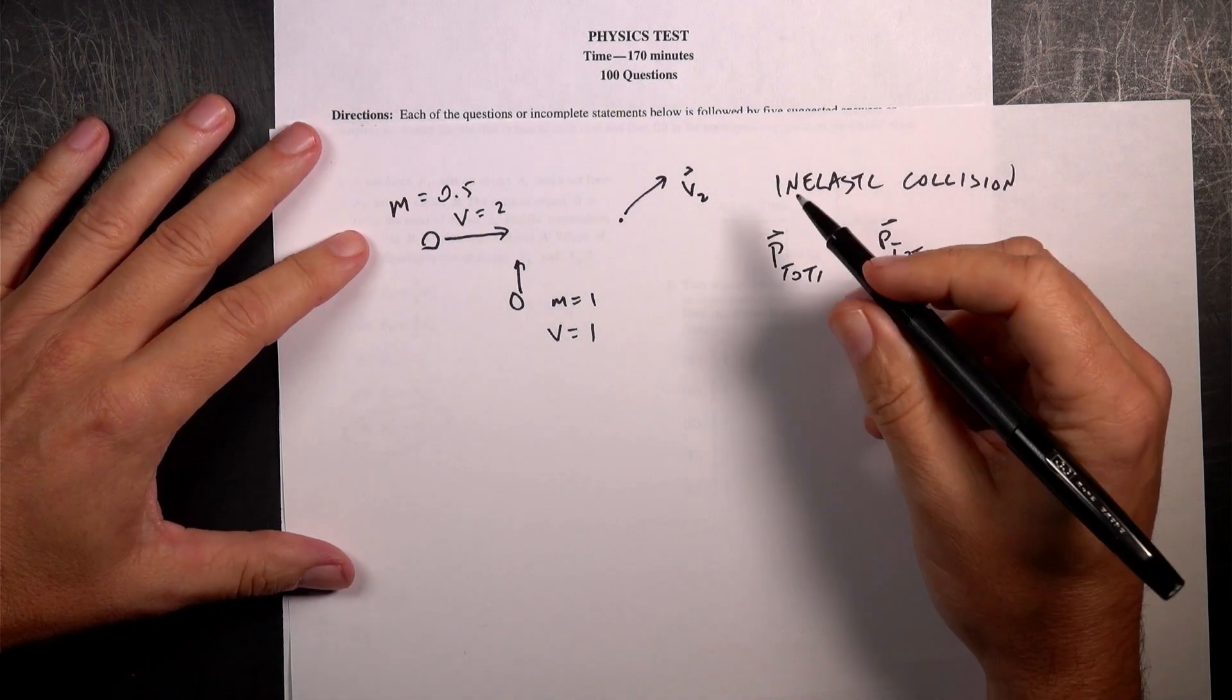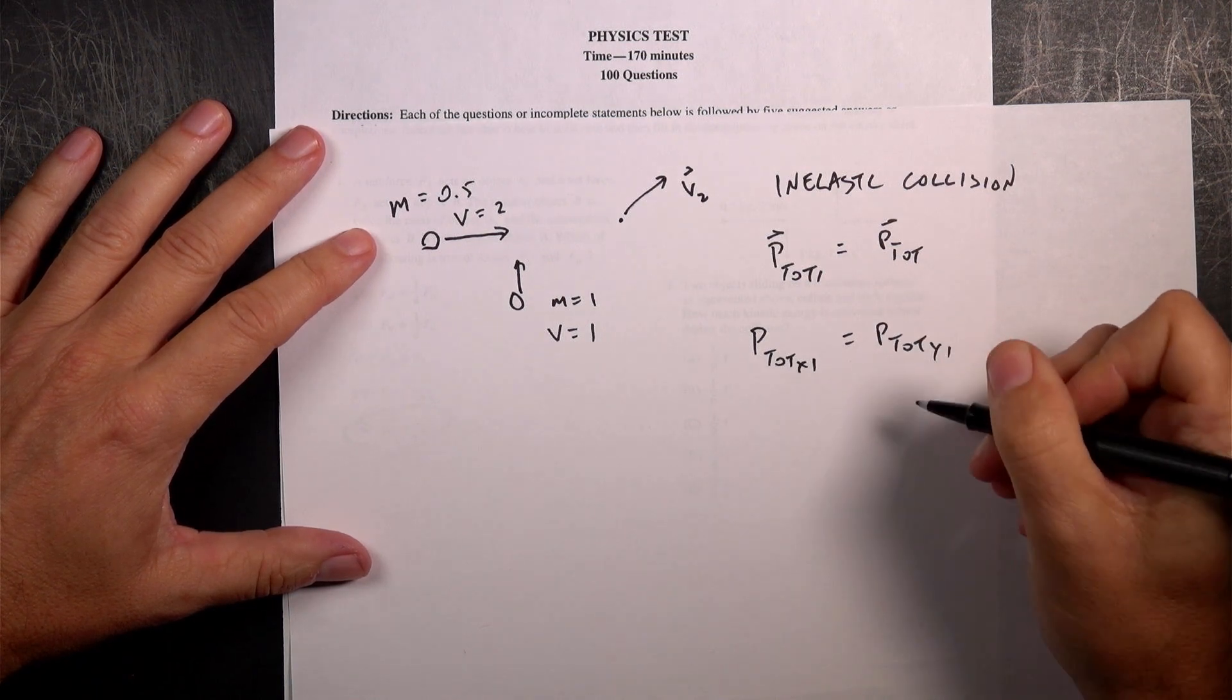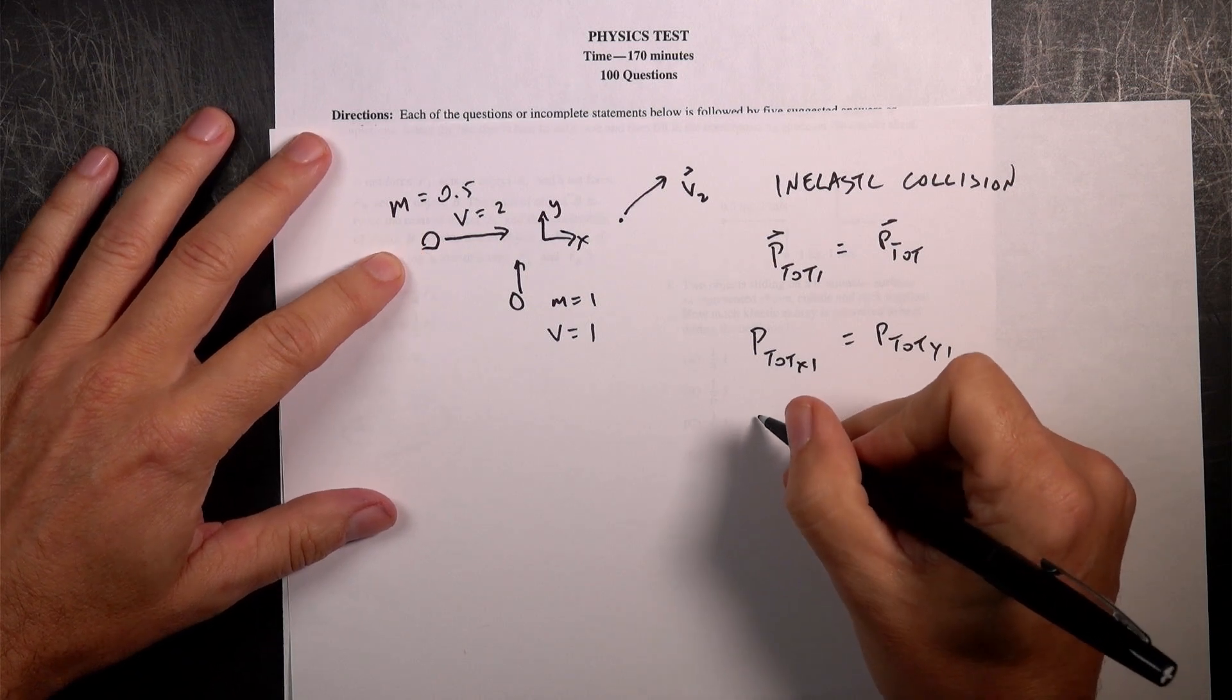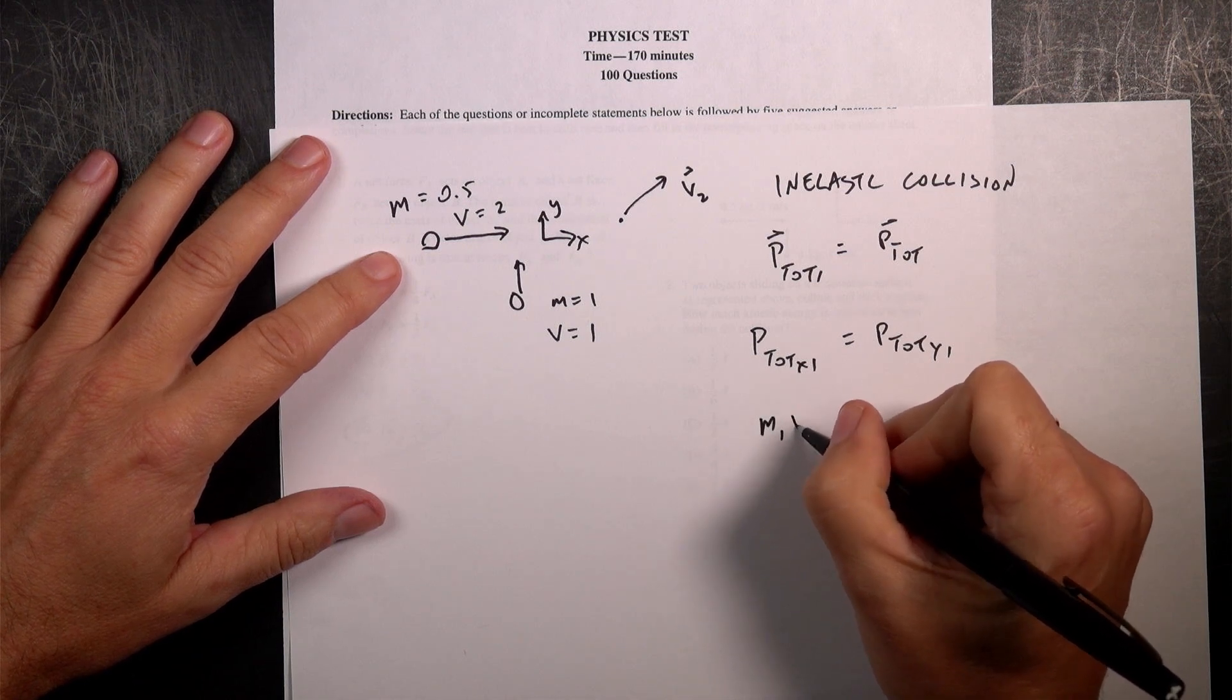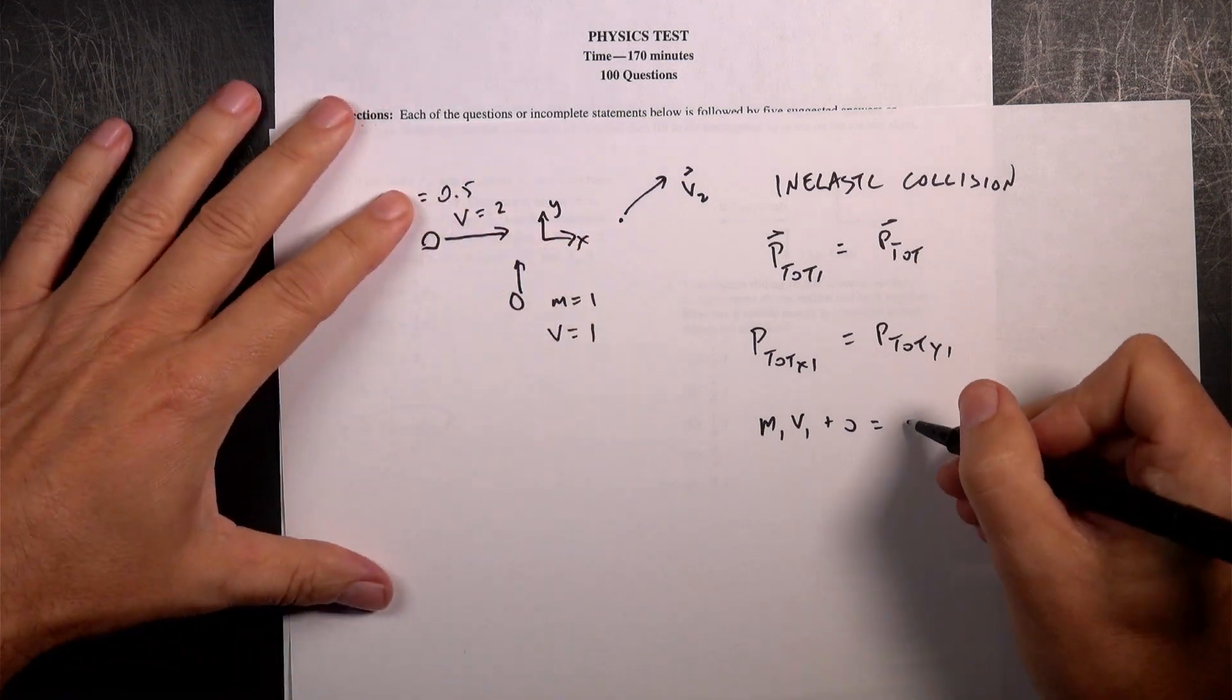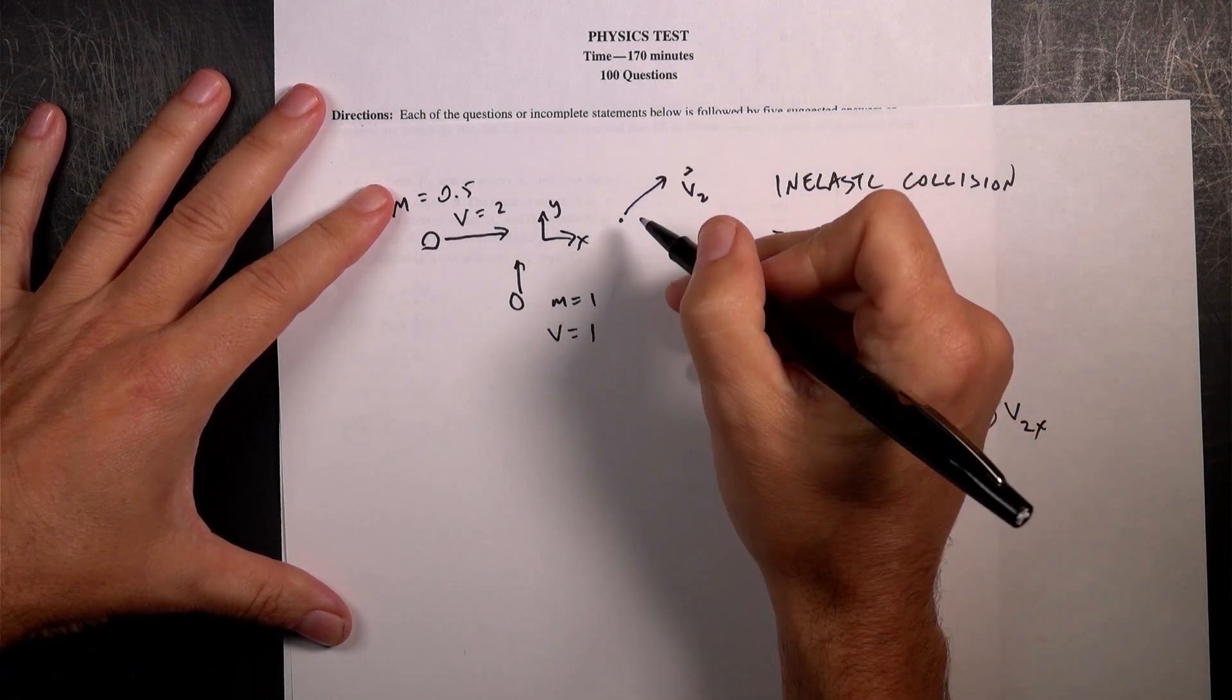So let's just write this as two equations in the X and the Y direction. So I'm going to say P total X1 equals P total X2. Before the collision, if I call this the X and the Y direction, the momentum in the X direction is going to be M1 V1 plus 0, because that one's not moving in the X direction. And then afterwards, that's going to be equal to M1 plus M2 V2X.